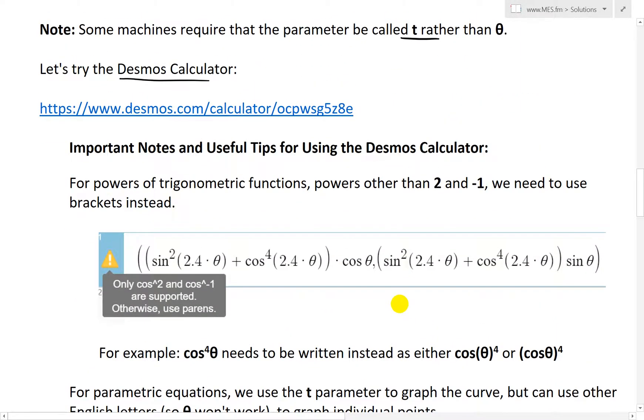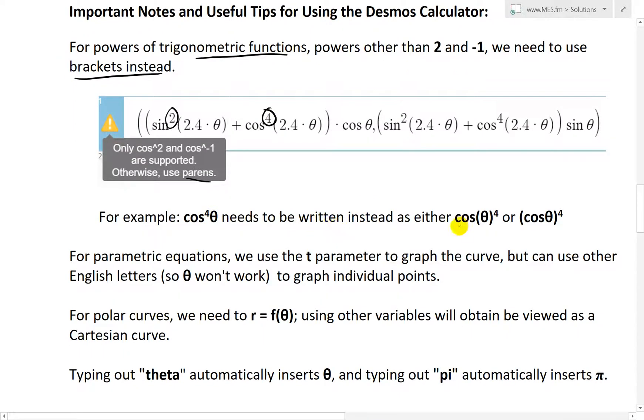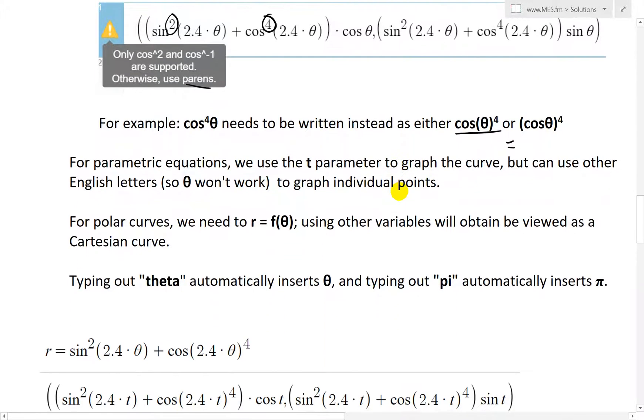First, I want to go over some important notes and useful tips for using the Desmos calculator. For powers of trigonometric functions, powers other than 2 and negative 1, we need to use brackets instead. As you can see here, only cosine squared and cosine to negative 1 works. Otherwise use parentheses. We can't put the 4 there, we need to move it outside. For example, cosine to the power 4 theta needs to be written as either cosine bracket theta to power 4, or cosine bracket theta, the whole thing to the power 4. These are the exact same thing, you just need to write that for the Desmos calculator.